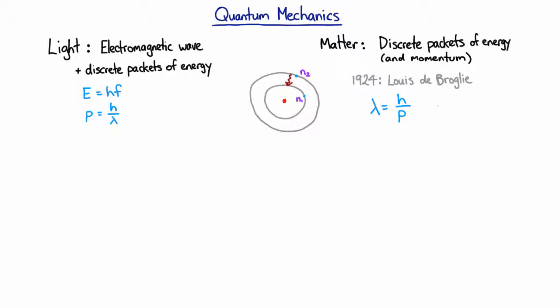So these so-called matter waves were the new model for all of matter. Now that means that our electron here is not, in fact, a little billiard ball traveling around in a circle. What it is is some kind of wave.